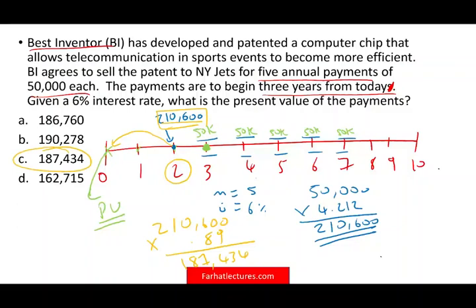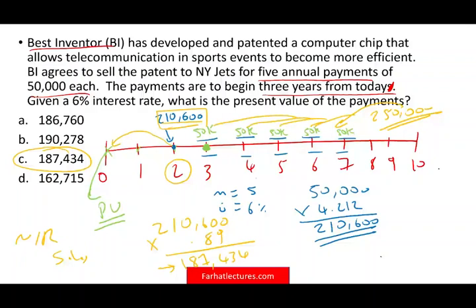What would be the journal entry? You would debit notes receivable for that amount and credit sales for that amount. So your sales is $187,434, and you have a notes receivable because you're going to be receiving the money later. The difference is: in total you're going to receive $250,000, so the difference will be interest revenue, but the sale is recorded at $187,434.